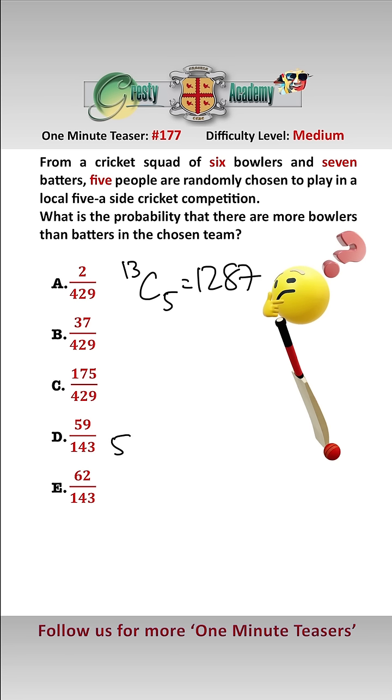Let's have a look at the various possible breakdowns of the team: 5, 4, 3, 2, 1 or zero batters in the team. If we had five batters then it's simply picking five batters from the seven and there are 21 ways of doing that.